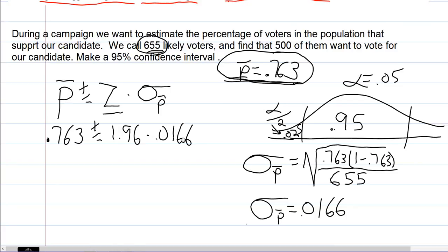So we plug that into our formula, 0.0166. Now we multiply that times our z-score of 1.96, and we get that our margin of error is 0.0325.